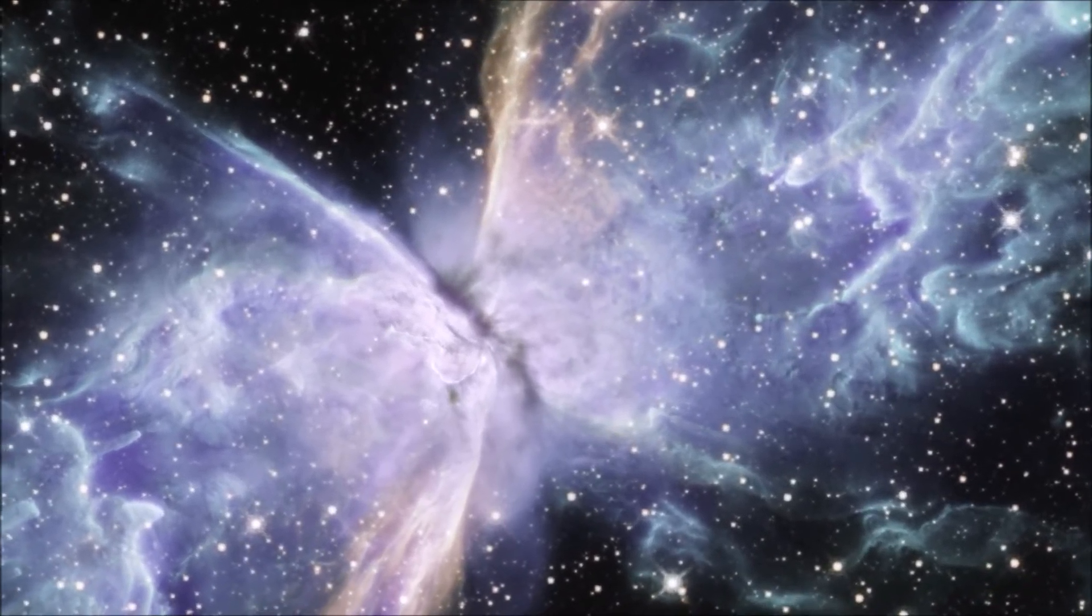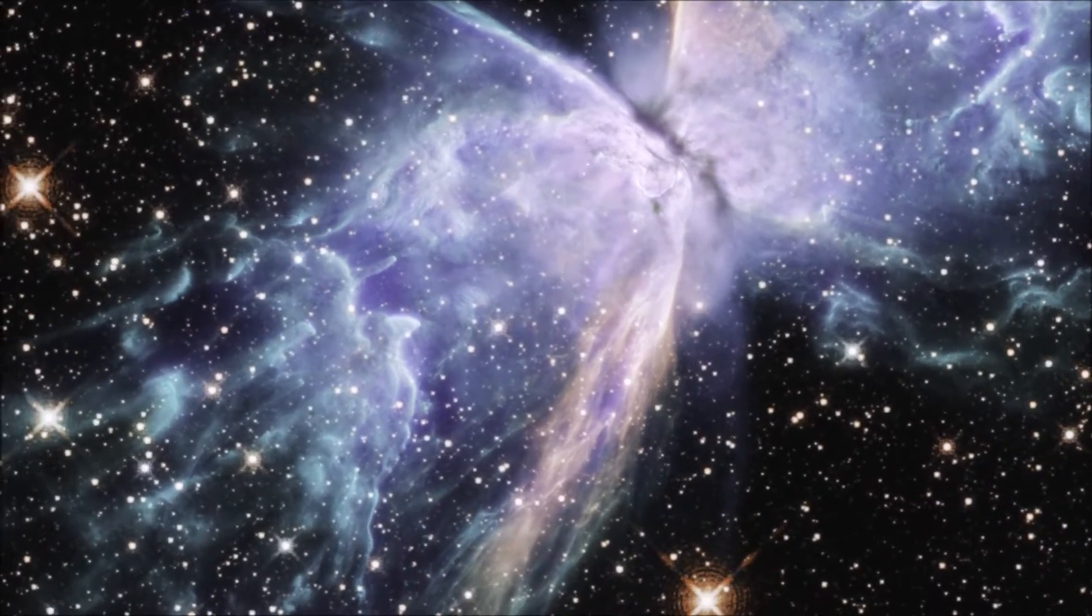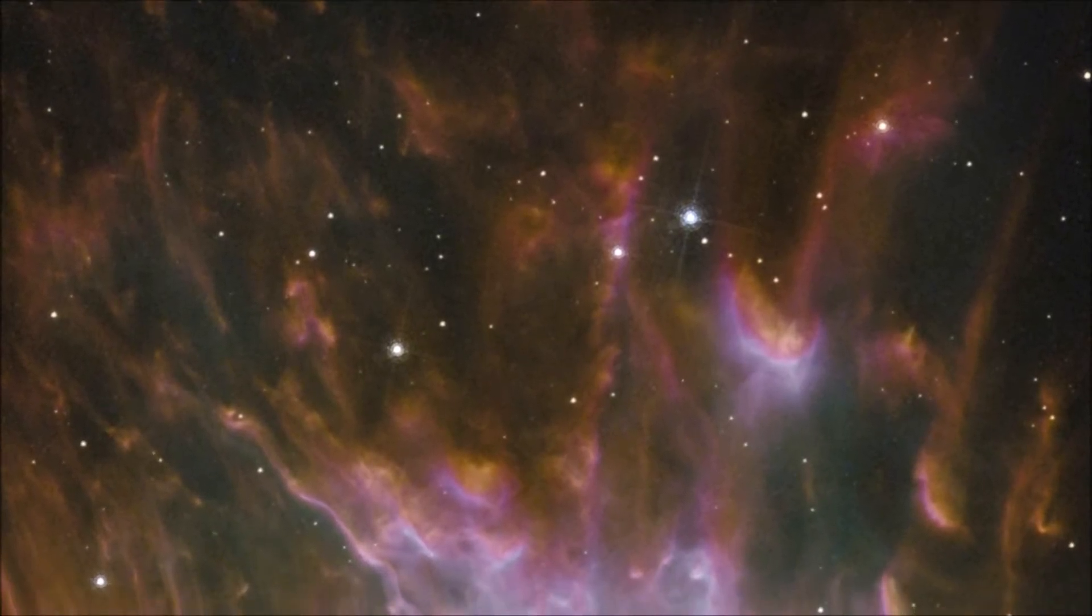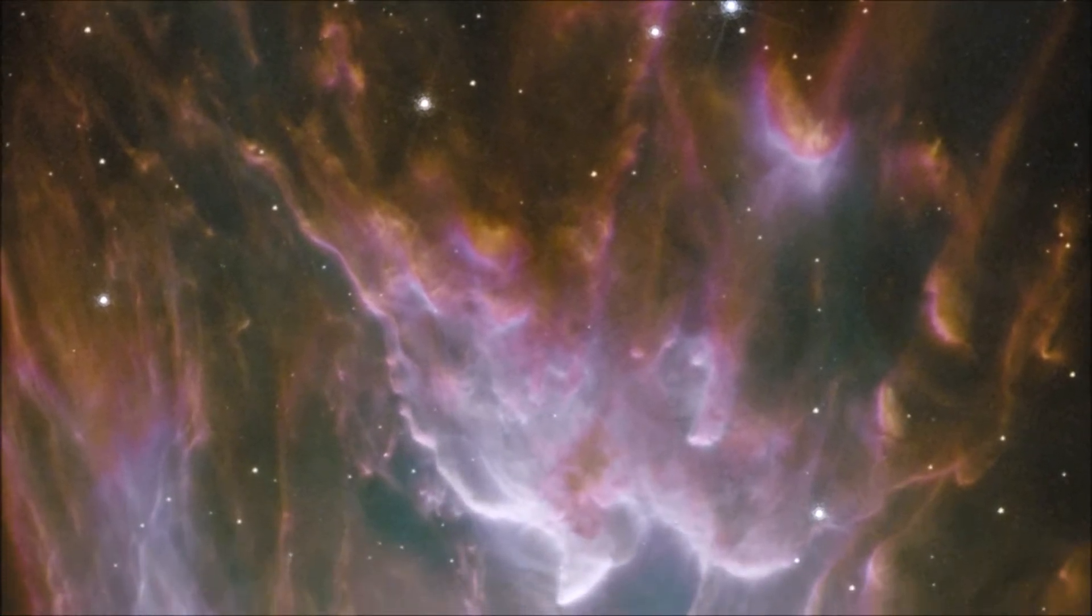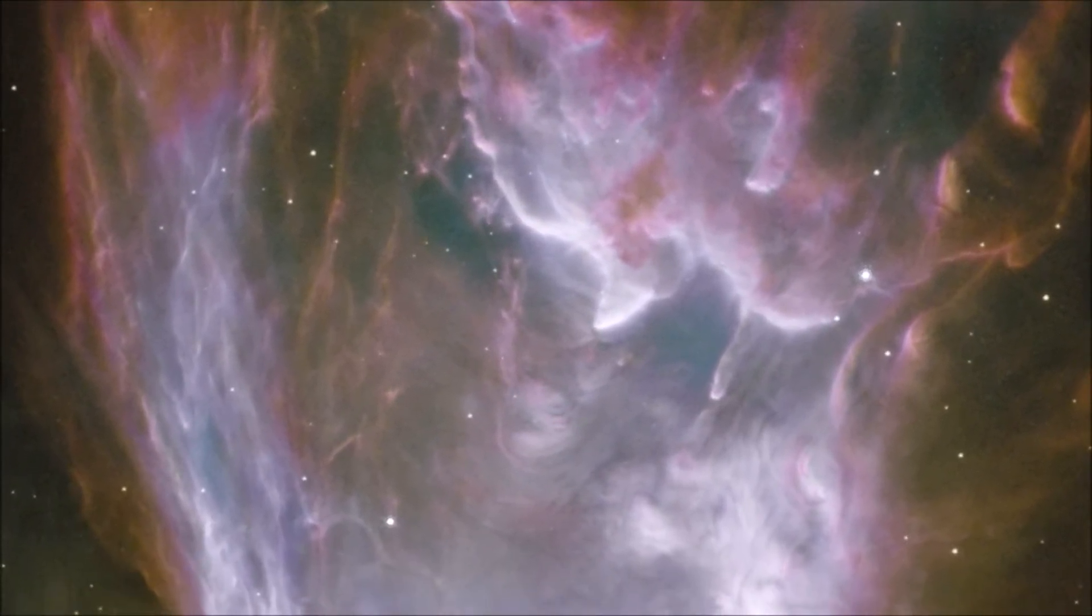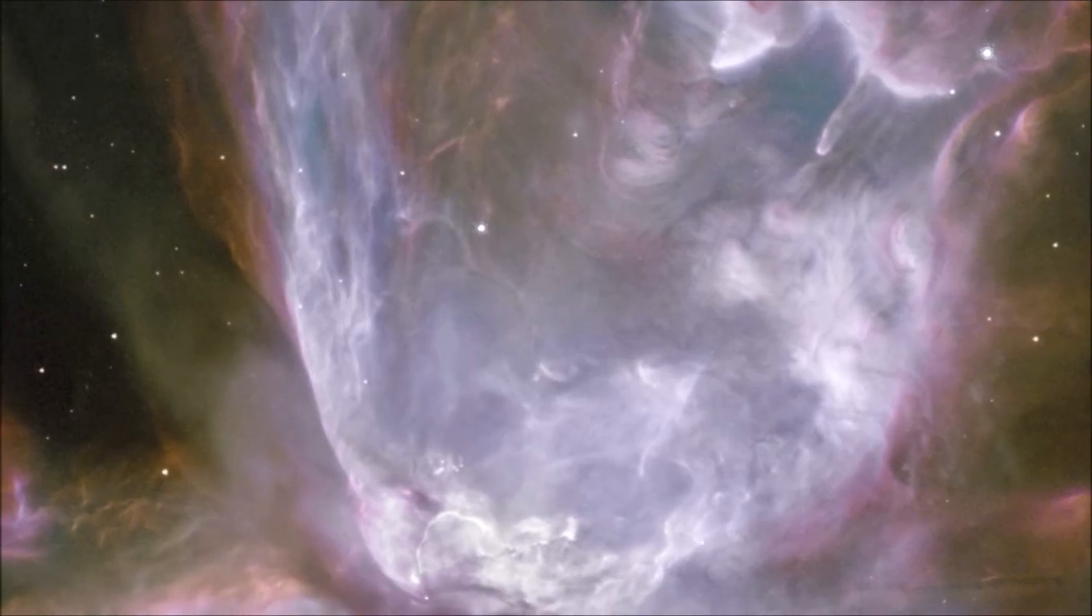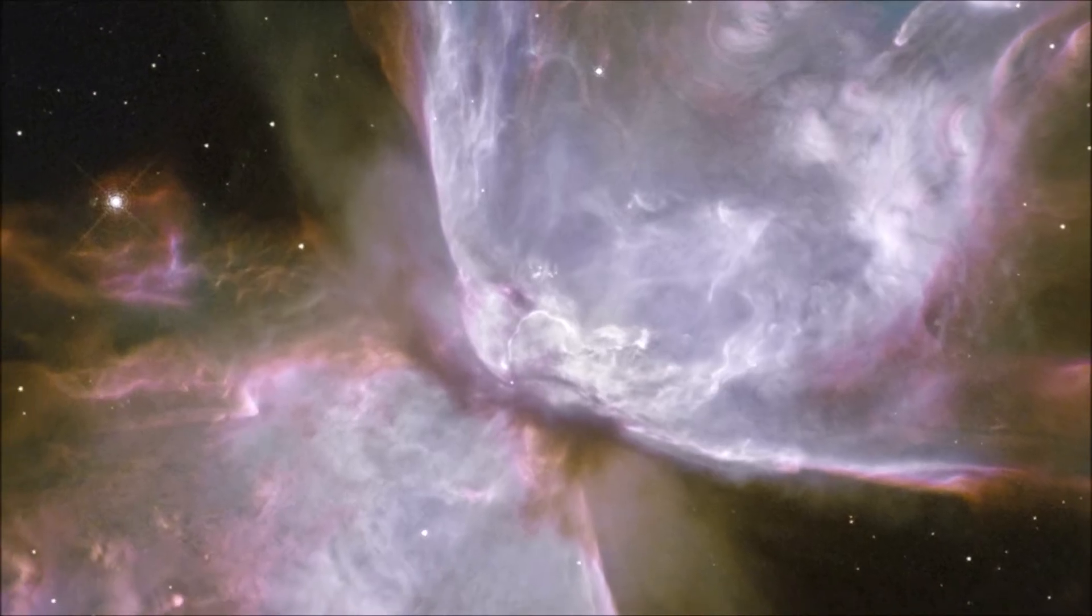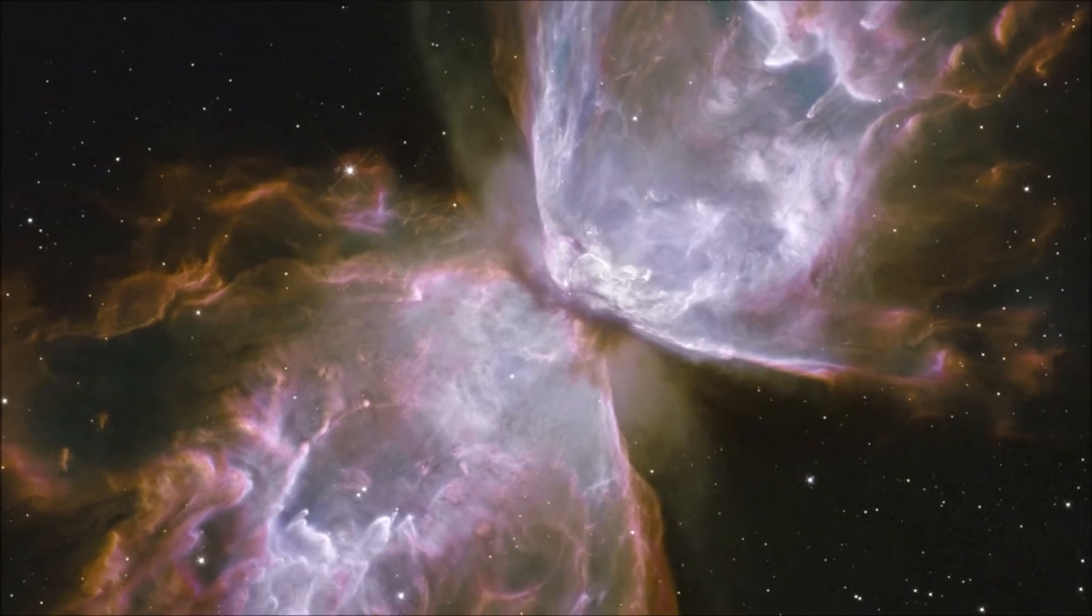This beautiful object is known as the Butterfly Nebula, and it is another example of a planetary nebula. Although it looks peaceful and like a delicate butterfly from afar, it is actually made of raging clouds of gas heated to more than 36,000 degrees Fahrenheit. For comparison, that is more than three times hotter than the surface of the Sun. The gas is also in motion, moving at more than 600,000 miles an hour. At that speed, you could go from the Earth to the Moon in just 24 minutes.